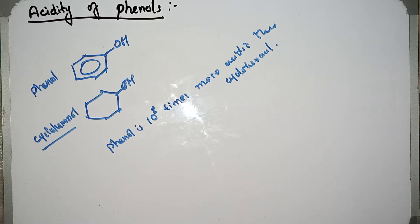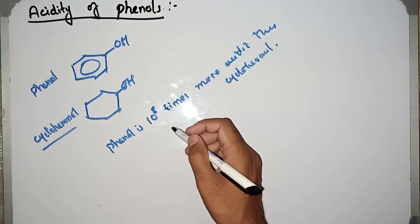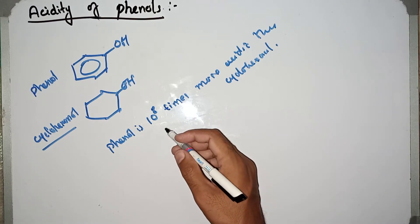What is the reason behind this? Why is phenol more acidic than cyclohexanol? In the previous lecture I told you there are a few terms used to determine acidic strength: one is hybridization, one is resonance, one is delocalization, and one is inductive effects. Here in this case, the reason is resonance — that is, delocalization — which enhances the acidity of phenol.